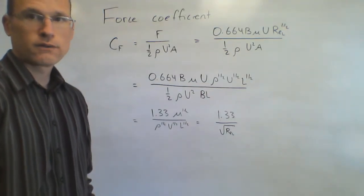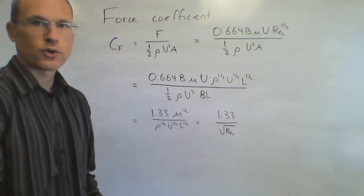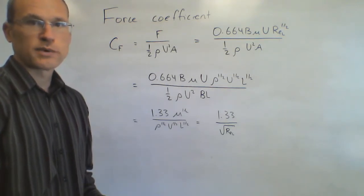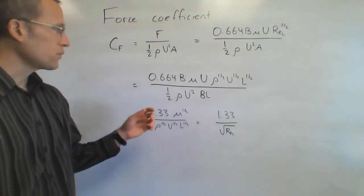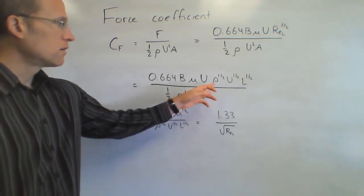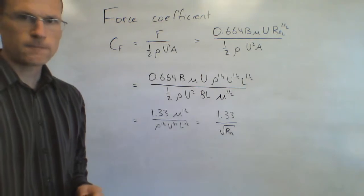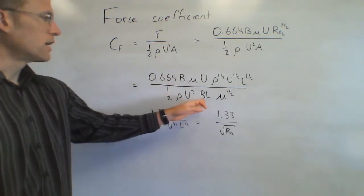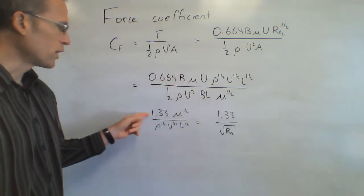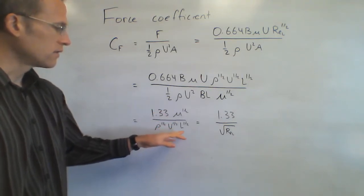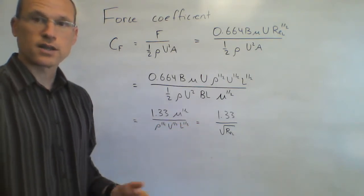Similarly, the force coefficient C_F equals force divided by 1/2 rho V squared times area. Taking the force equation — 0.664 B mu U times Re_L to the 1/2 — and dividing by 1/2 rho U squared times area B times L, after canceling terms, C_F equals 1.33 divided by the square root of the Reynolds number based on length.